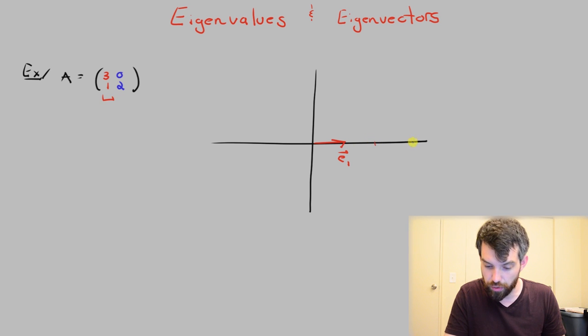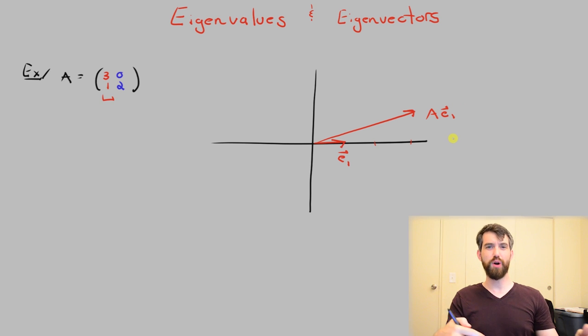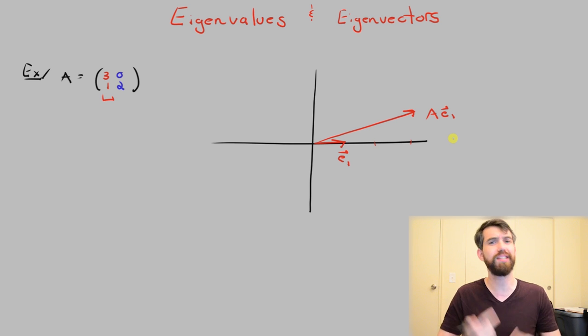So there is 2, there is 3, it would go over to some vector like this, and that would be my matrix A applied to E₁. You'll notice that I wrote the vector in the domain, E₁, and the vector in the codomain, AE₁, and I drew them on top of themselves in the same picture, because they're both R².